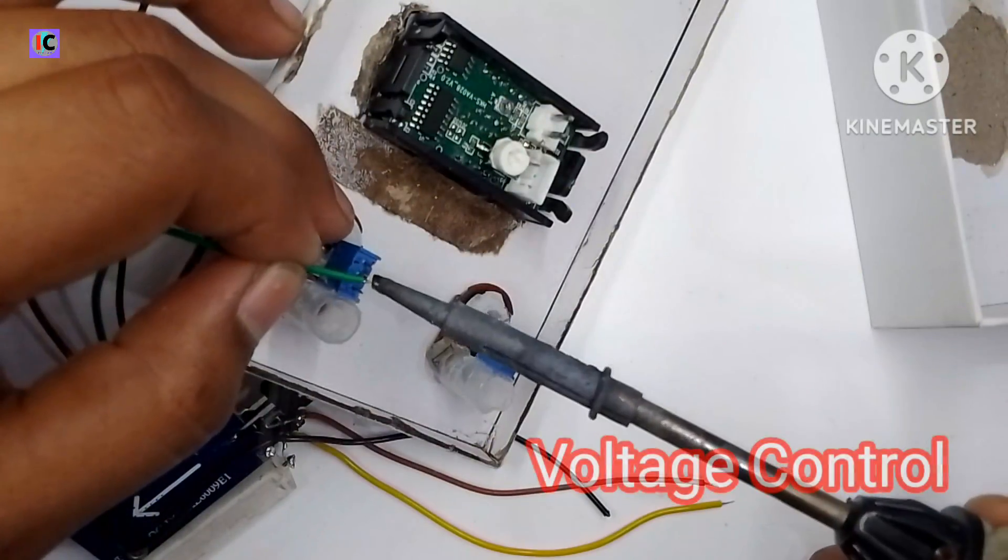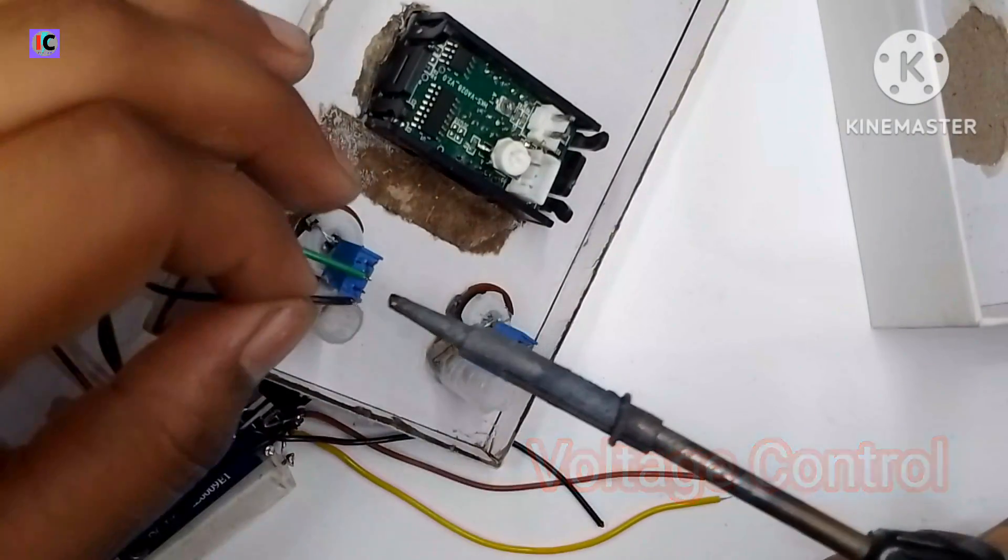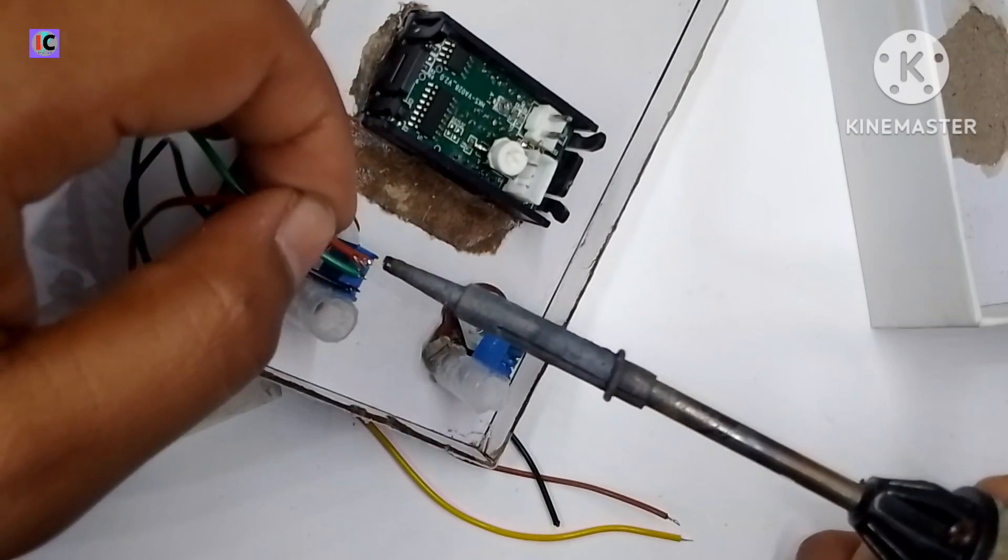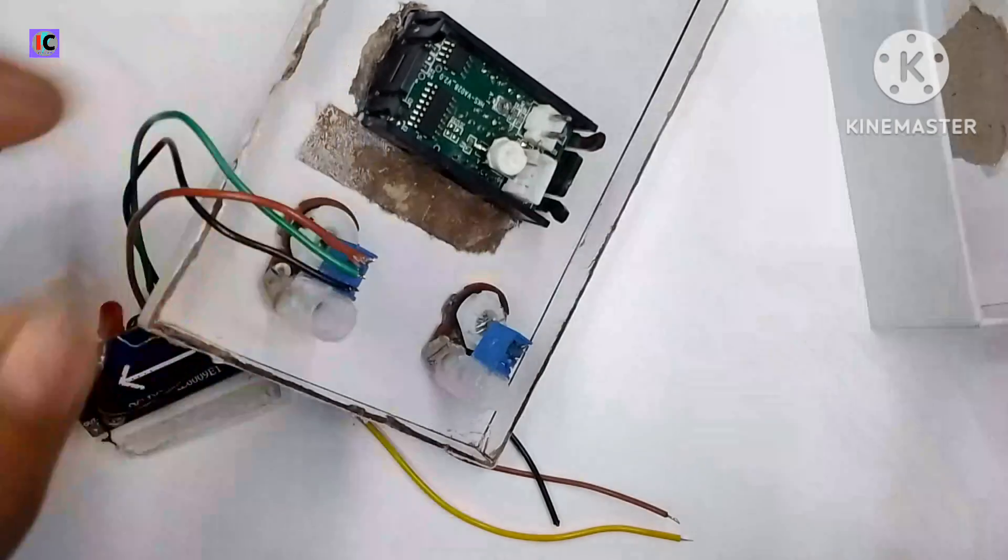And here we can see I have soldered the voltage sensing pin and ground and the positive. So this potentiometer controls the output voltage.